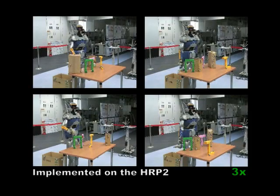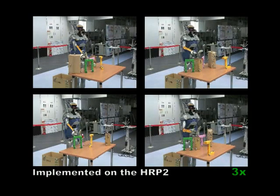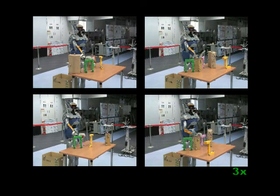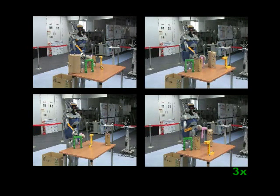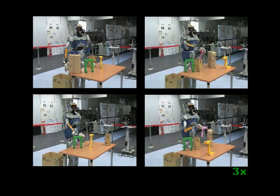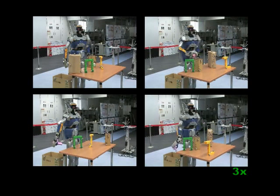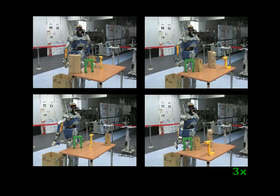We have implemented our framework on the HRP2 robot at the Digital Human Research Center. The goal of these experiments was to have the robot perform a clean-up task. The robot must pick up certain objects in the scene and place them into the trash can on its right. These videos show the robot's motion as well as the time used to select grasps and plan trajectories.